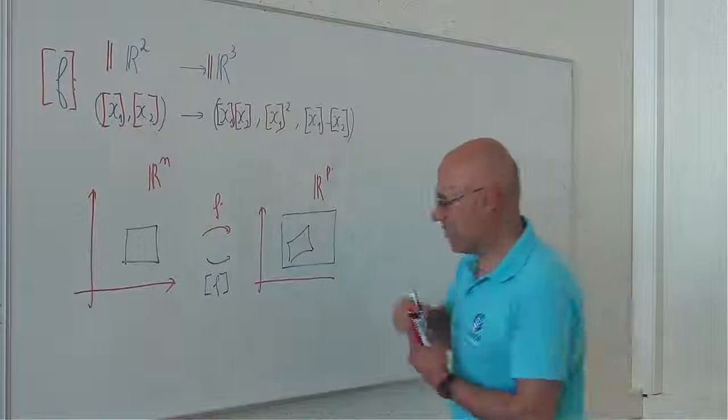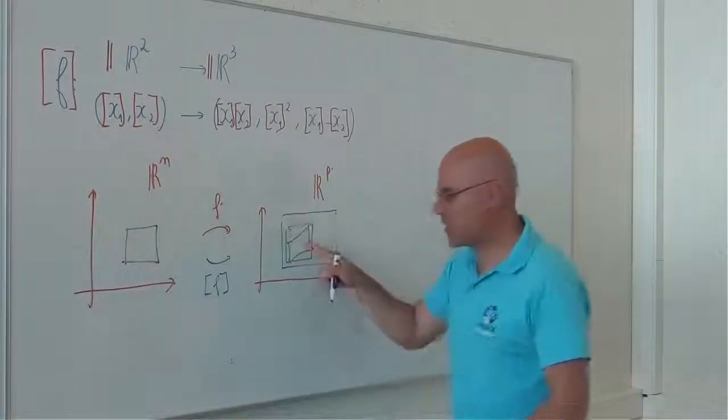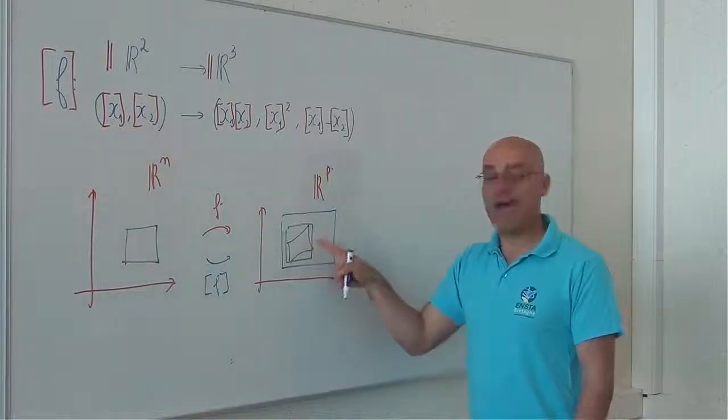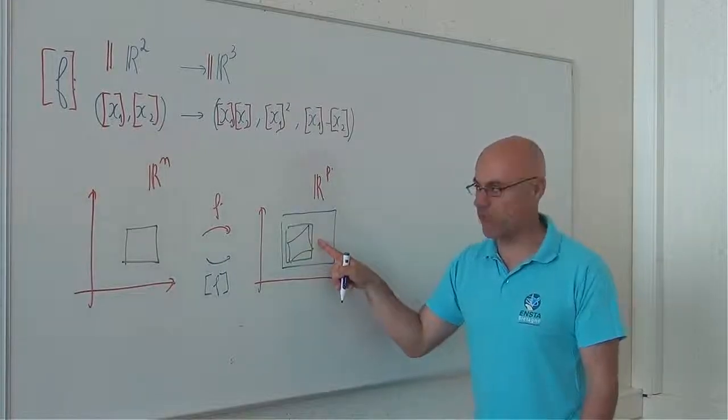If I have the smallest box, which contains the image box, then I have the minimal inclusion function.